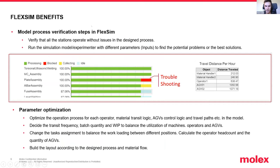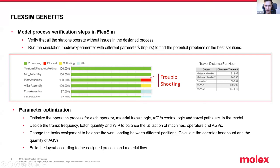Coming to FlexSim benefits, I want to give small examples of how FlexSim was beneficial for us in finding bottlenecks or issues. We use dashboards to track everything in terms of states or other parameters. We verify that all stations operate without issues in the design process, then run the simulation model or experimenter - depending on what we're analyzing - with different inputs to find potential problems and think about how to resolve them. Here I give a small example of how one of the stations was getting blocked and how all other states are being tracked throughout the stations.